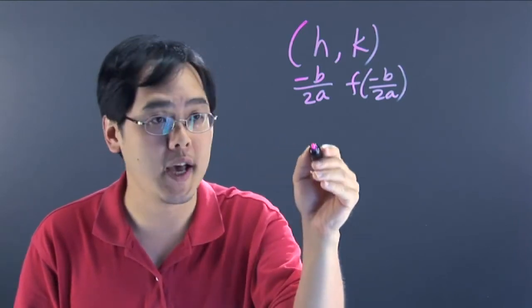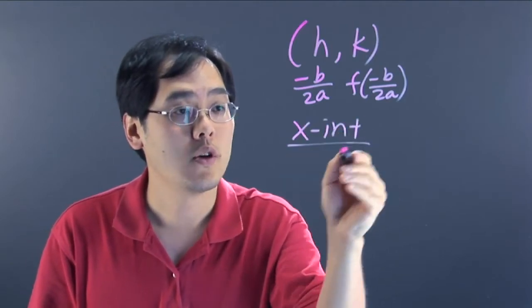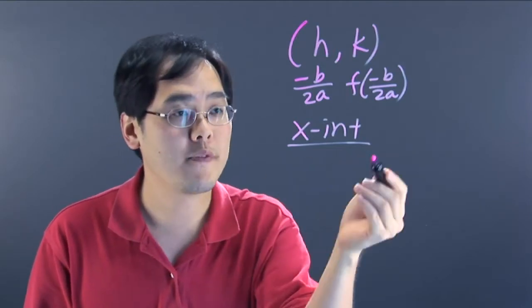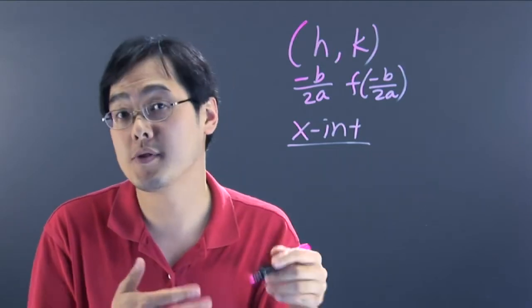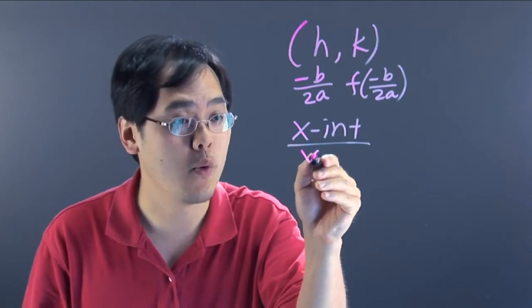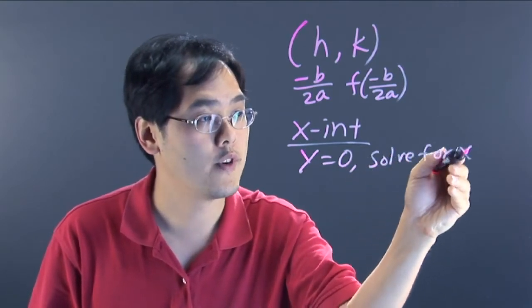When it comes to the intercepts, you have the x intercepts and you also have the y intercepts. The x intercepts, sometimes you'll have 2, sometimes you may not have any. But in any case, to find the x intercept, you let y equals to 0 and then you solve for x.